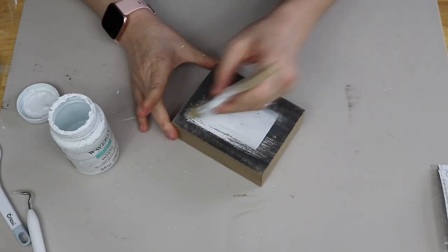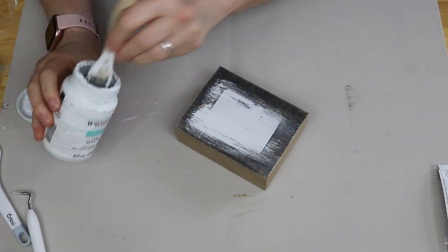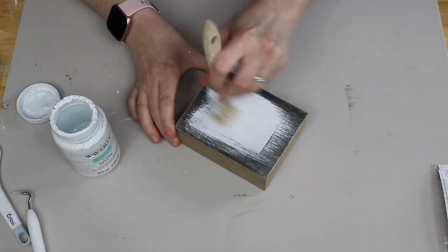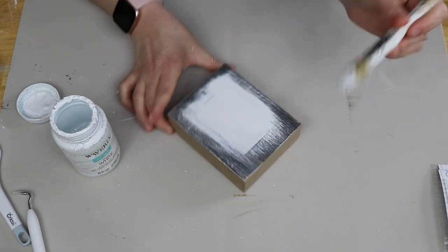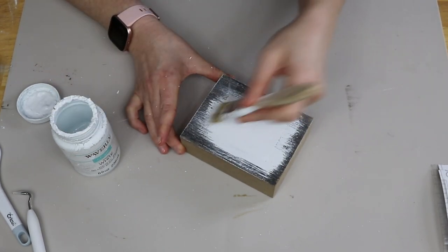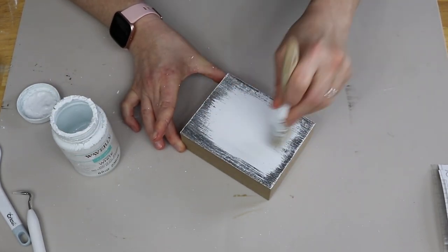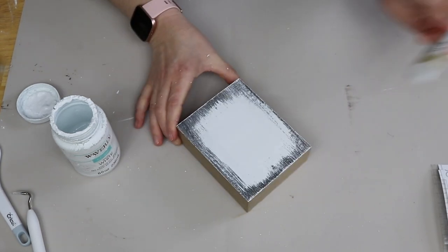After that I'm going to take my white Waverly chalk paint and I'm giving this a pretty good coat of paint but focusing more of the paint on the middle and kind of doing like a dry brush type of thing on the outer edge of the box. This was just personal preference.